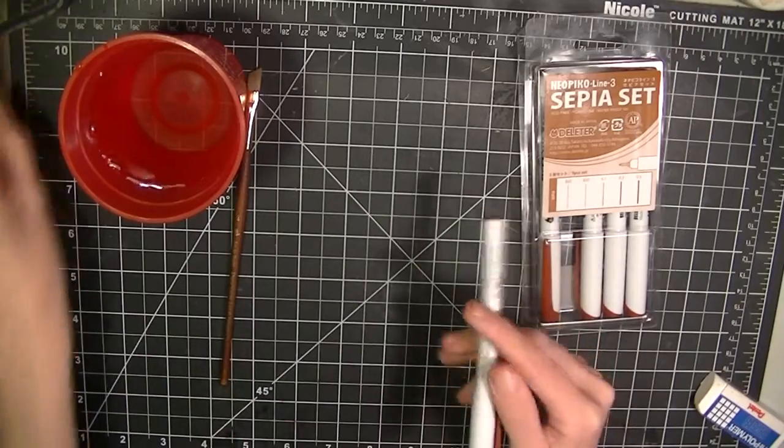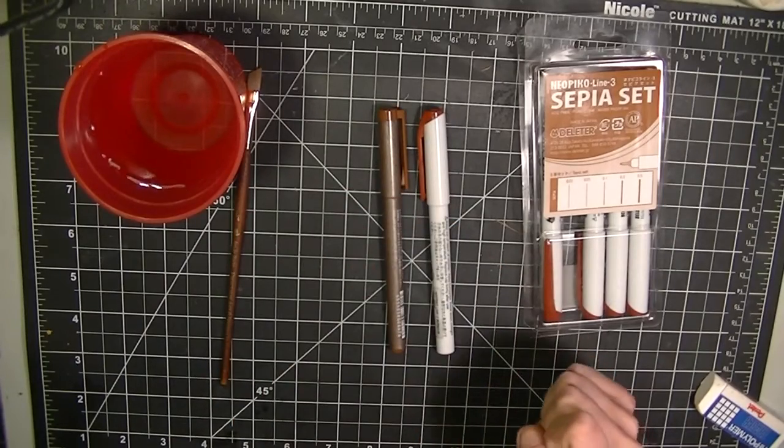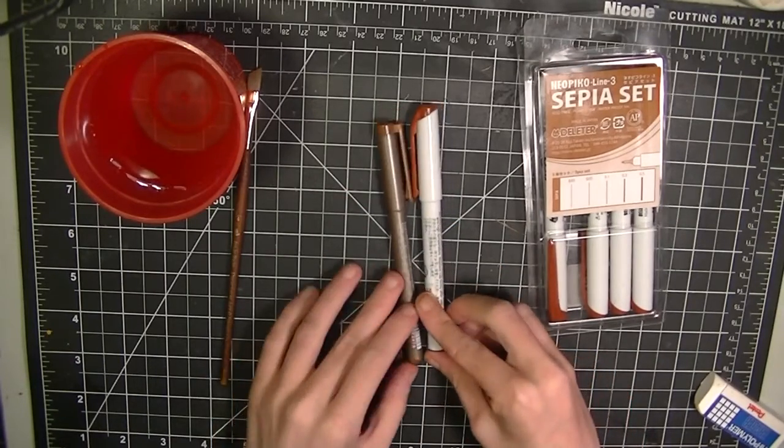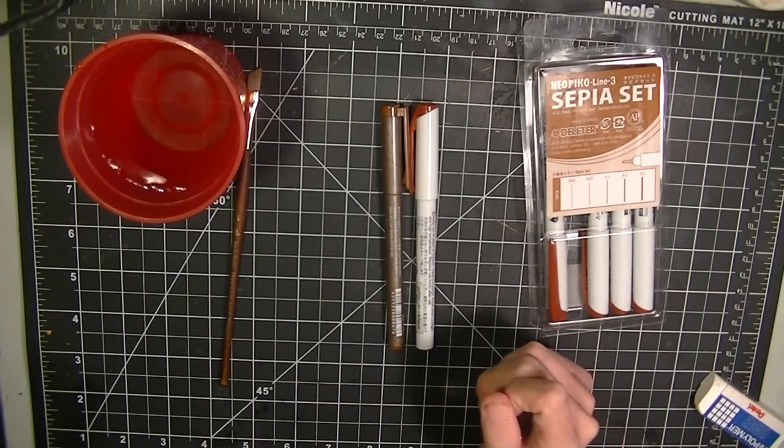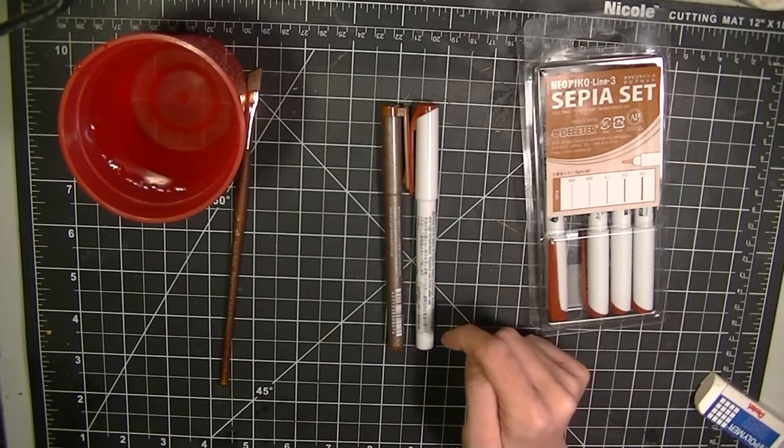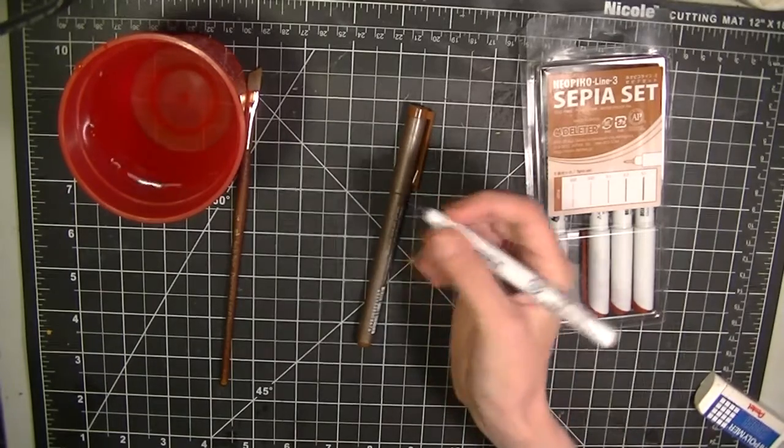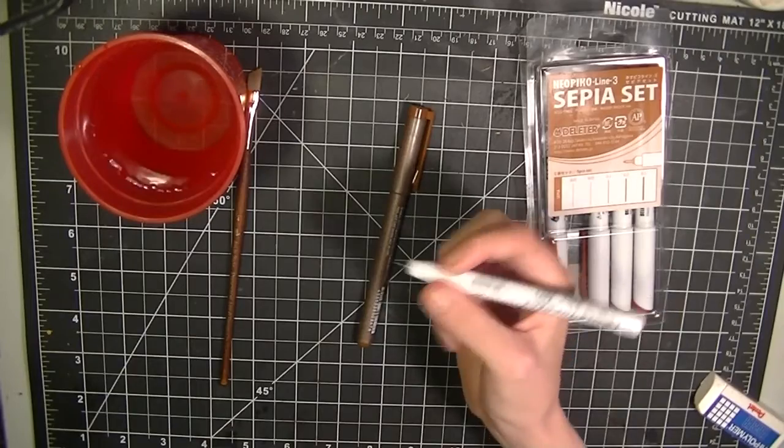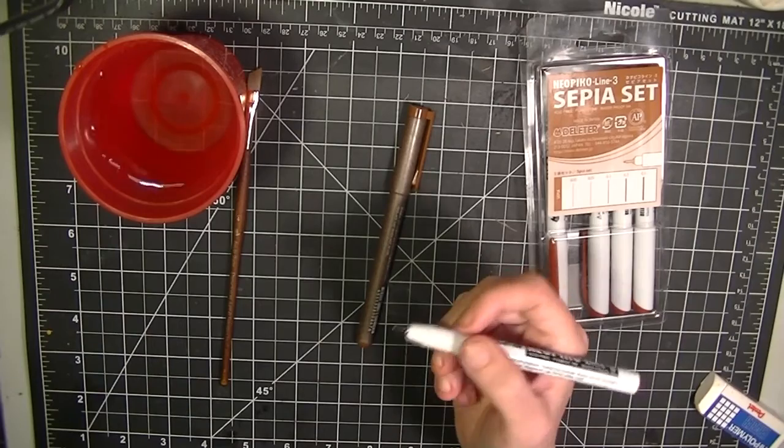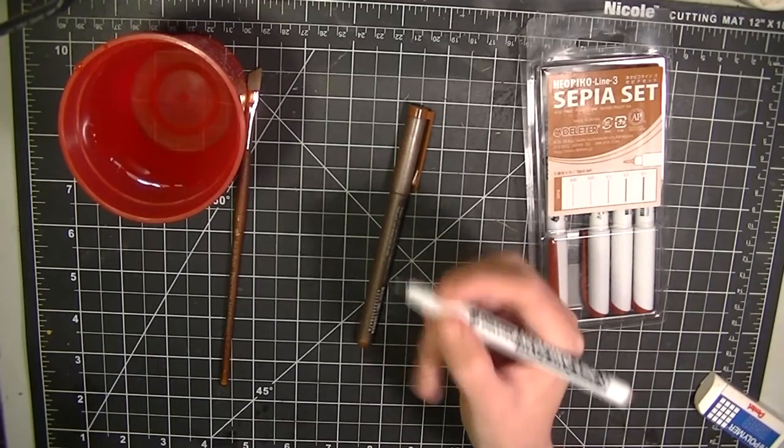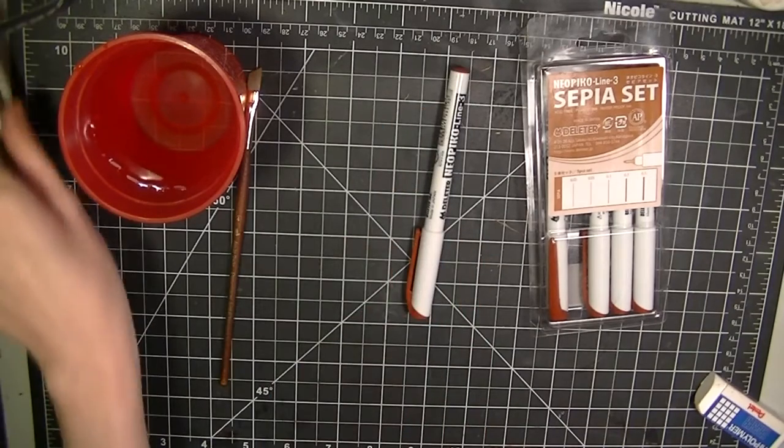One thing I will say as well is the difference between a Copic and this one. If you guys can see, they are the same size. They actually are. They have the same length. However, the deleter pens barrels seem to be bigger. So, one thing I noticed is it's a bit more comfortable to hold in my hand because as you guys know, I have this callus on my middle finger from all of my lining and drawing. And so, we're going to see if that keeps it comfortable and doesn't tear into my finger like a Copic multiliner will.